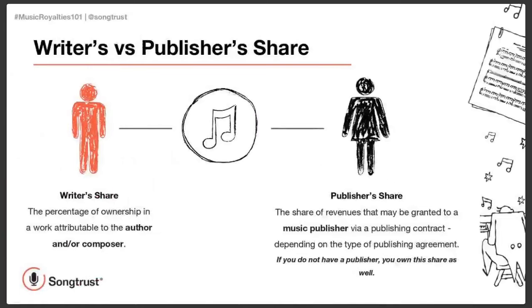Breaking up the different shares of publishing royalties — if you're a writer affiliated with a society, a PRO such as ASCAP or BMI, you are registered as the rights holder of your music, and you're able to at least collect the writer's share. Similarly, if you are a writer and a publisher, you can affiliate an entity with the societies and collect your publisher's share. Songwriters typically see their writer's share but may be missing their publisher's share. You can earn both halves of your performance royalties — the writer's share and the publisher's share — without a publishing entity.